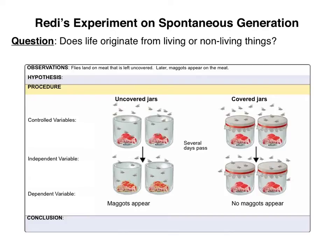If I were to write a hypothesis, I might have come up with something like: if glass jars containing raw meat are covered, then maggots will not emerge on the raw meat because adult flies do not have access to the meat on which they would lay their eggs, which will eventually hatch and create visible maggots. It doesn't matter if your hypothesis matches mine or not — I just came up with that off the top of my head, much like you just did. Okay, let's look at the rest of the slide in a little bit more detail.